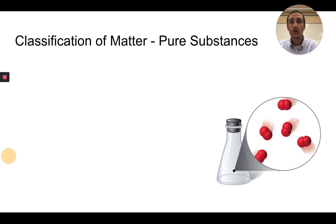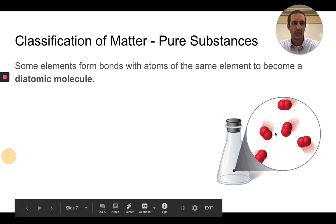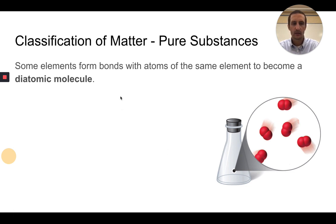Another note about pure substances is that some elements form bonds with atoms of the same element to become what we refer to as diatomic molecules. A diatomic molecule is when there are two atoms of the same element joined together by a bond. It's still an element, however, we refer to it as a diatomic element.